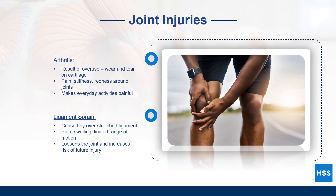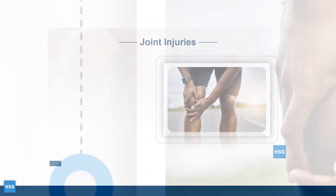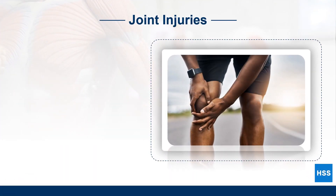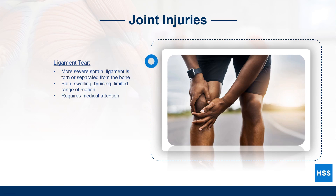By stretching out the ligament, a sprain actually weakens the joint and increases the risk of future joint injuries. A ligament tear is a more severe ligament sprain — in this case the ligament is torn or completely separated from the bone. The signs and symptoms include pain, swelling, bruising or discoloration, and limited range of motion. While a ligament sprain may heal on its own with ice and rest, a ligament tear may require medical attention to heal properly.